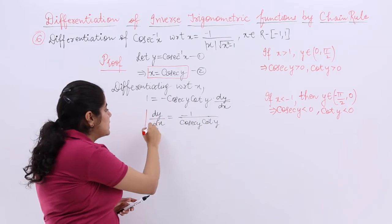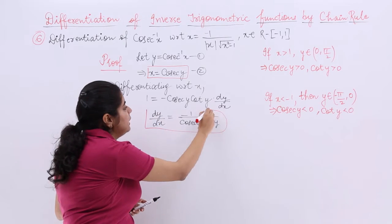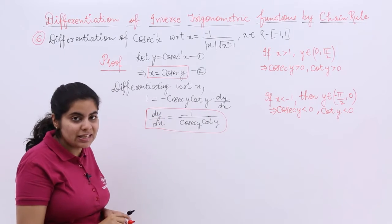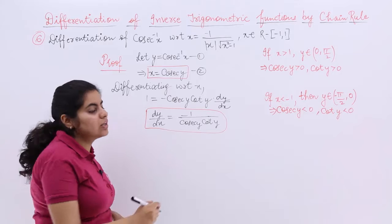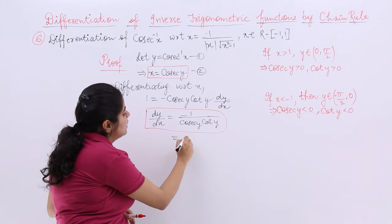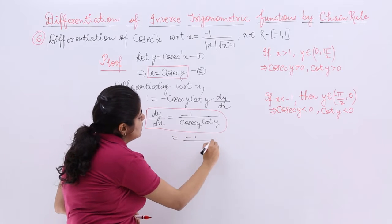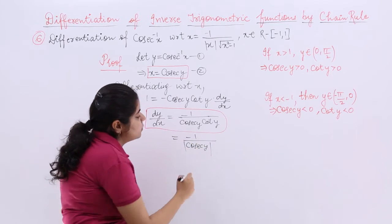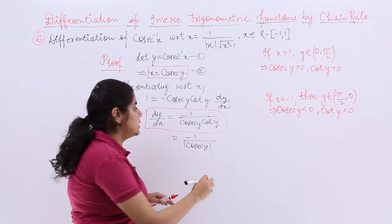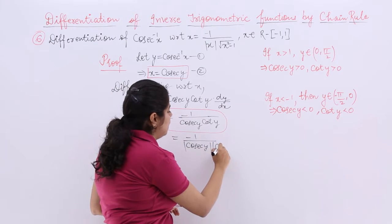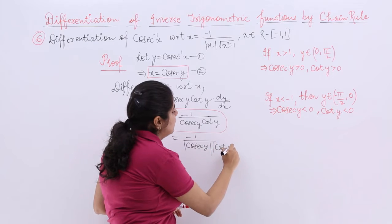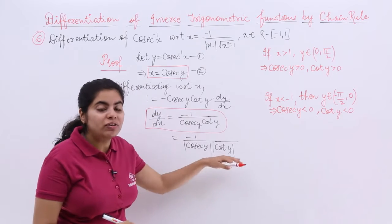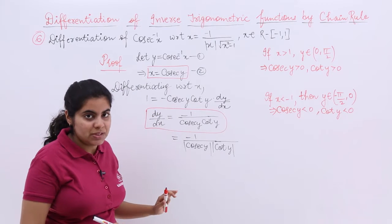Let's place this result in a box — we will be needing it for future reference. Now, cosecant y cot y can be written in terms of the product of absolute terms, as we have already done in our previous video.